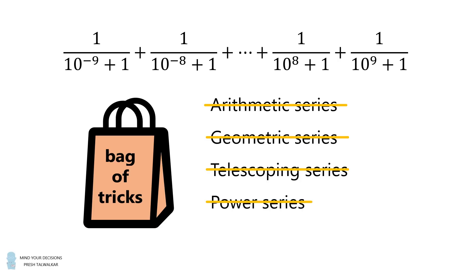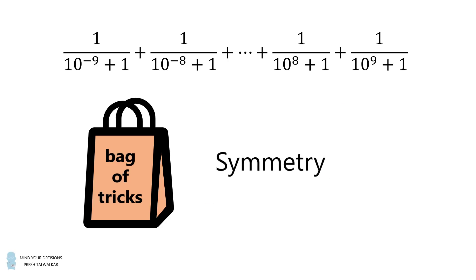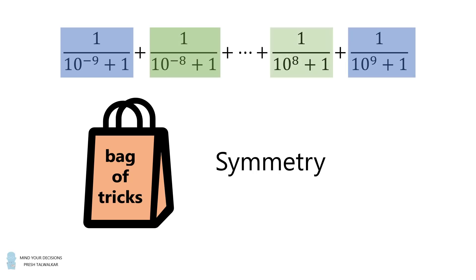Then I noticed a little bit of a pattern. There's a symmetry in this sum. This is the trick that helped me solve the problem. I noticed the first and the last terms paired off, then the second term and the second to last term paired off, and so on. So let's see how this simplifies.